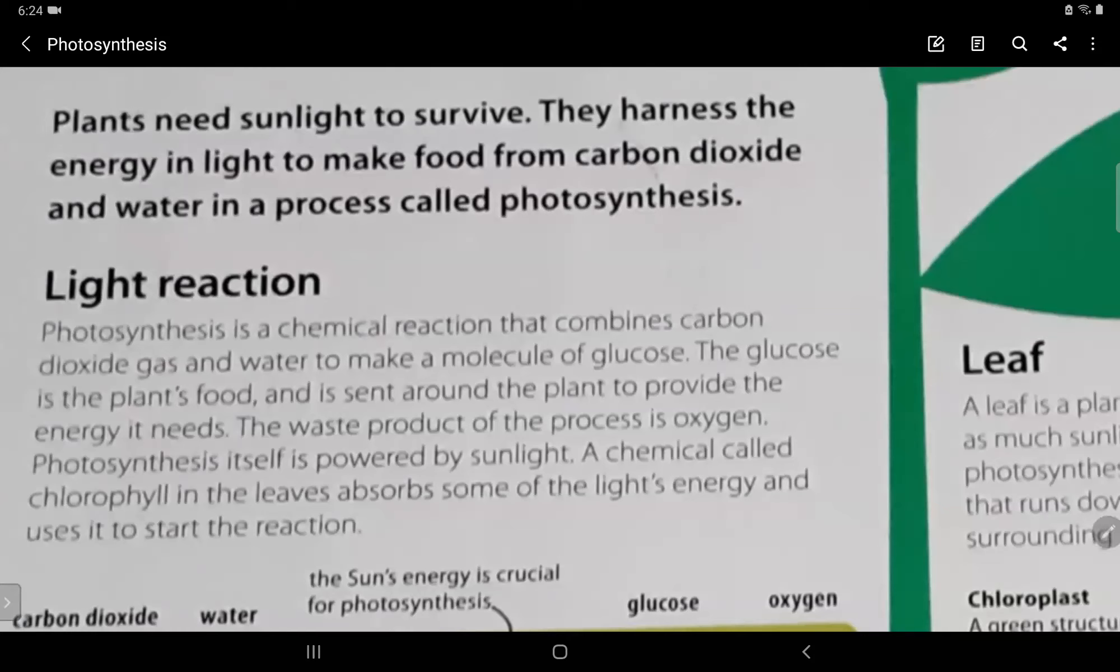Now where does this oxygen go? Yes, the oxygen goes into the atmosphere from where we breathe the oxygen in. Now let's read ahead. Photosynthesis itself is powered by sunlight. A chemical called chlorophyll in the leaves absorbs some of the light's energy and uses it to start the reaction.